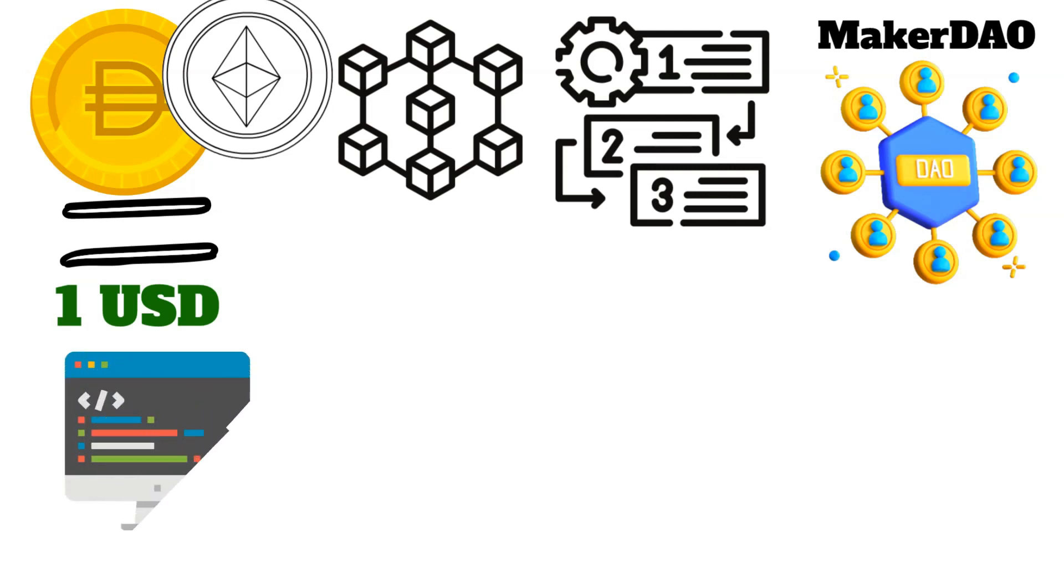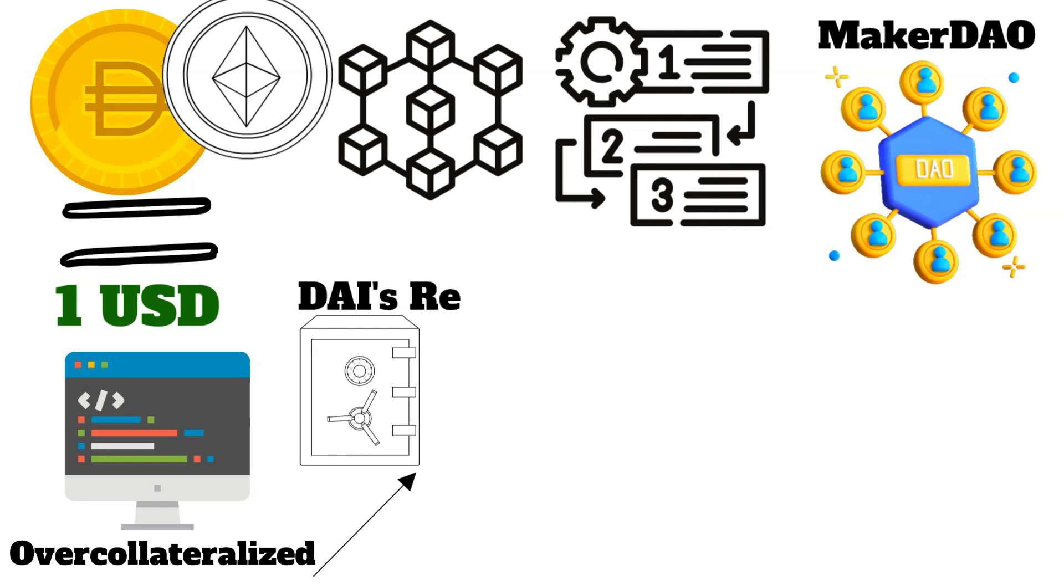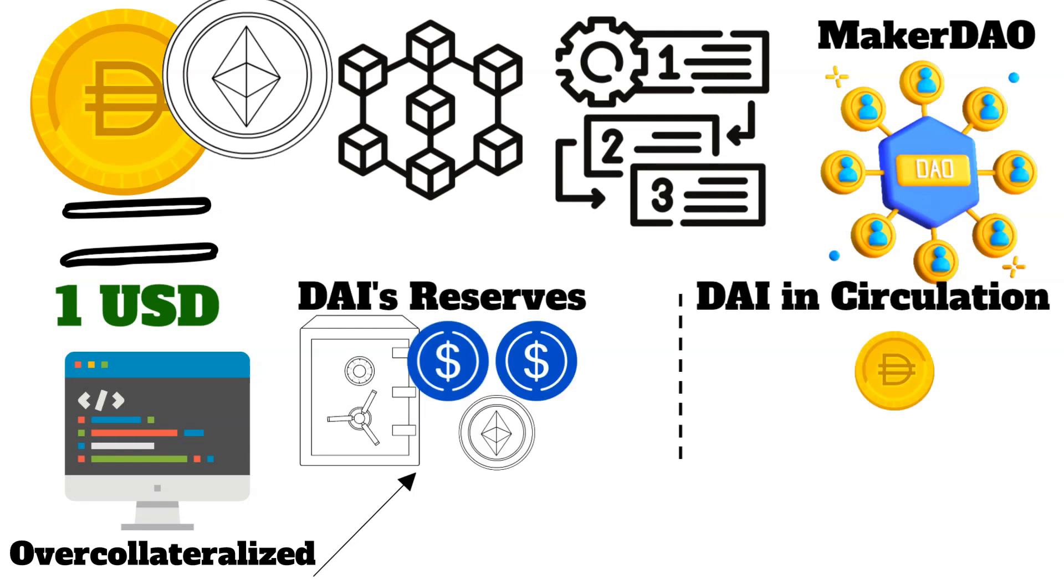DAI is an algorithmically backed stablecoin which is overcollateralized. The term overcollateralized means the reserves held by the stablecoin exceed the amount of that stablecoin released into circulation. DAI's reserves are over 150% of its circulating value. DAI is backed by a mix of fiat collateralized cryptocurrencies like USD coin and other cryptocurrencies like Ethereum.